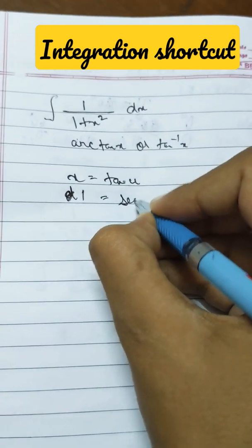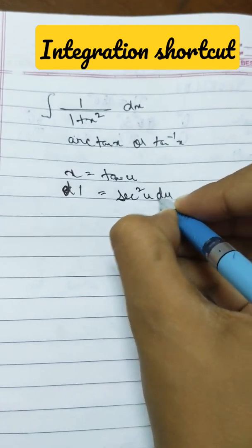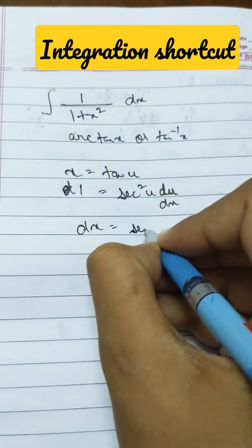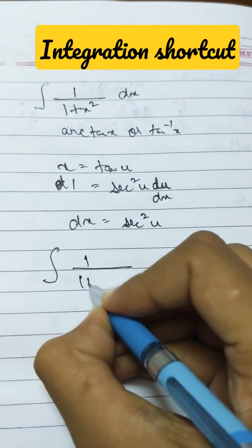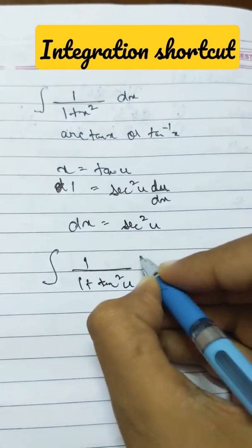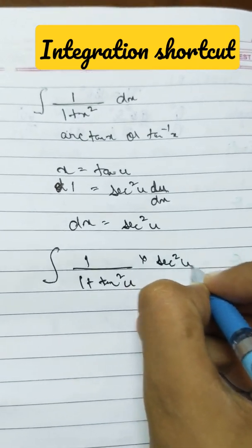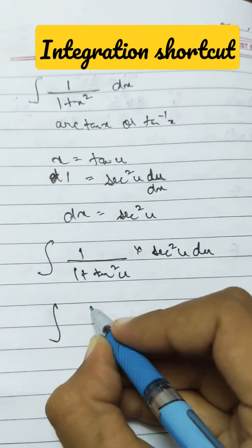One would be equal to secant squared u times du by dx, so dx would be secant squared u du. Now substituting the values, we get one plus tan squared u into secant squared u du.